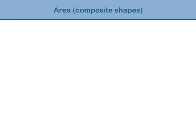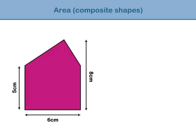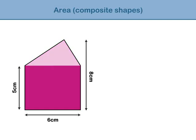Here is an example of a composite shape. This shape is made from a rectangle and a triangle. To get the area of the compound shape, it is necessary to break the shape into smaller parts and then calculate the area of each of the parts individually.